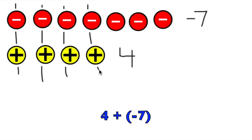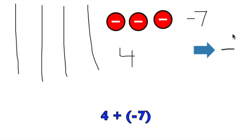So there's 4 pairs that make 0. They get removed. We can see that we have 3 negative chips left, meaning that 4 plus negative 7 has a sum of negative 3.